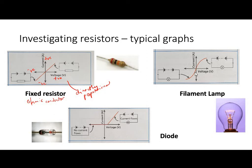Now I want you to compare that with our filament lamp. In our filament lamp, you'll notice it's not the same graph. There is a point at which as we increase voltage, current doesn't increase by the same amount. And equally in the opposite direction. So this is a non-ohmic conductor — it doesn't follow the rules, it doesn't follow Ohm's law. The reason for this is that as we run current through a lamp, the lamp heats up. So at this point here it is heating up, and therefore resistance is increasing — resistance is not constant.